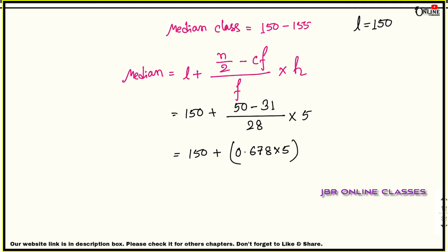Calculating: (50 − 31) / 28 = 19/28 ≈ 0.678. Then 0.678 × 5 ≈ 3.39. So Median = 150 + 3.39 = 153.39 (approximately).